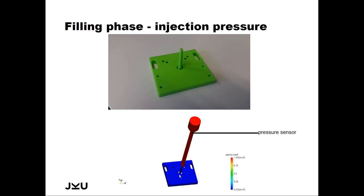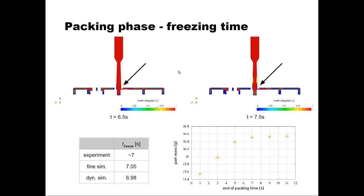In the packing phase the most important point is when the part freezes. In this case the very thin tunnel gate freezes at a certain point — the key question is when, because after this point you can switch off the packing pressure, which saves energy. Experimentally, you do trial and error: switch off the pressure after one, three, five, seven, nine, and eleven seconds. Once the gate is frozen the part mass no longer increases, so around seven seconds you can switch off the packing pressure. The simulation also captures this nicely at around seven seconds.